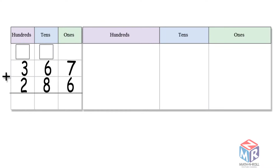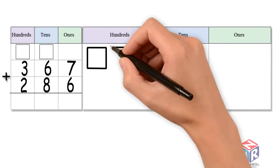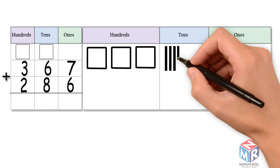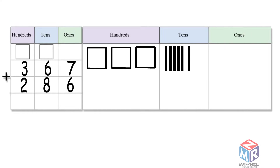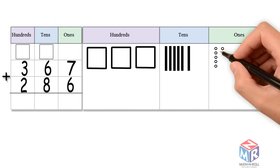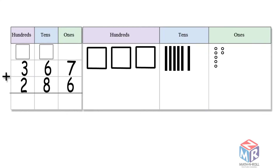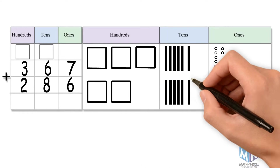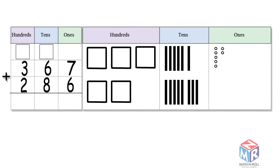Let's try another example: 367 plus 286. Let's draw it out. 367 has three hundreds, six tens, and seven ones. 286 has two hundreds, eight tens, and six ones.